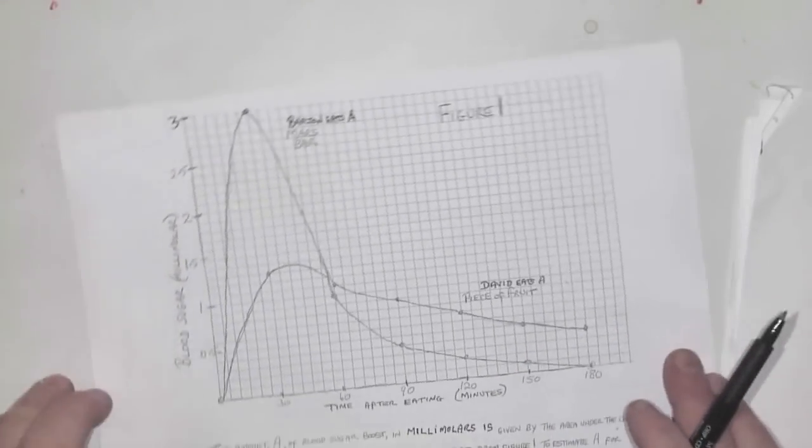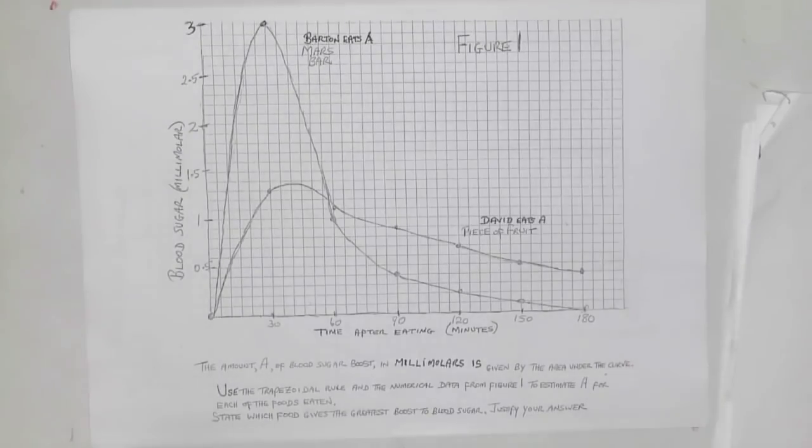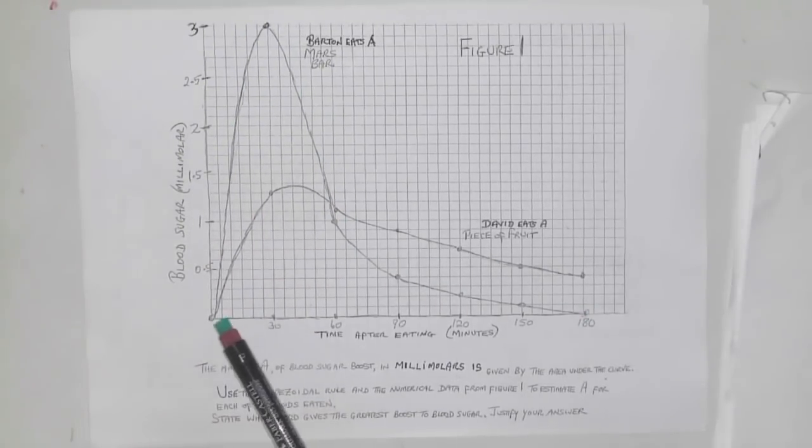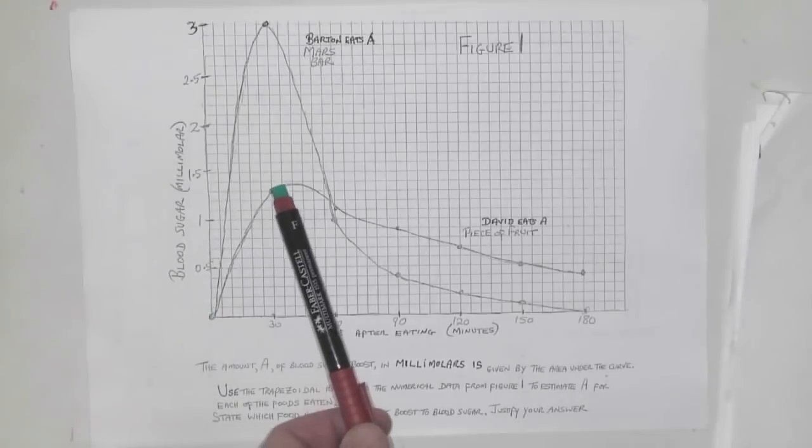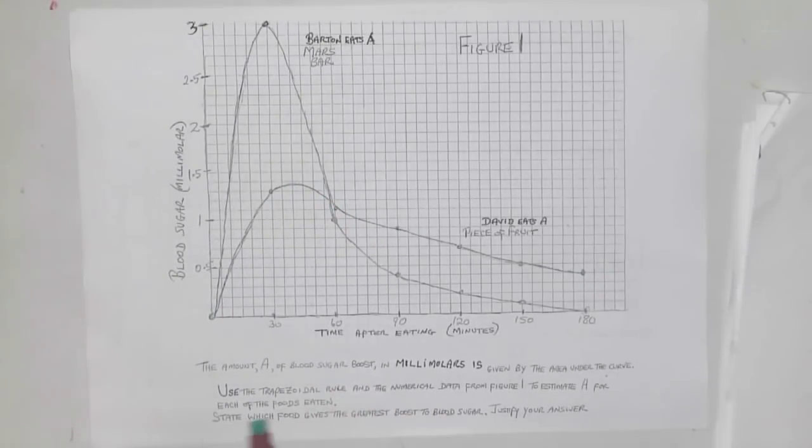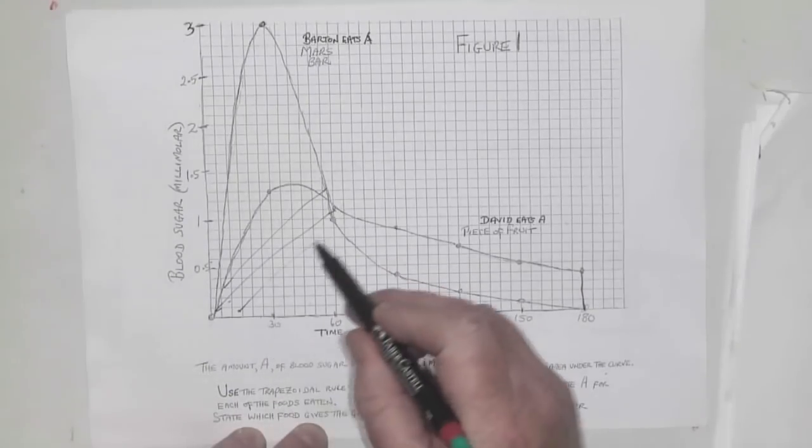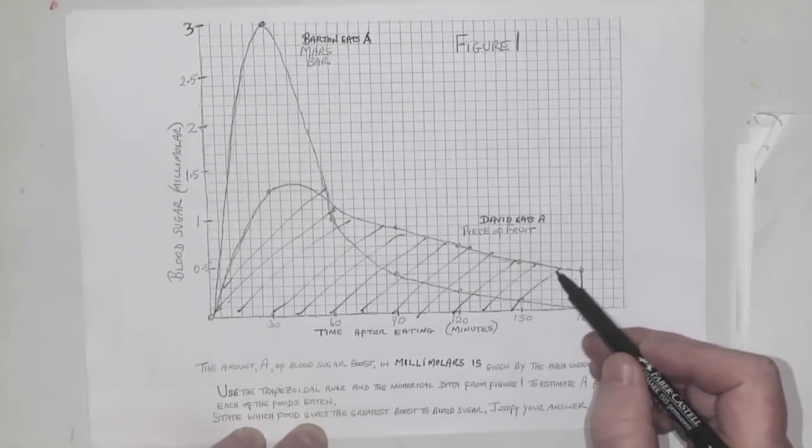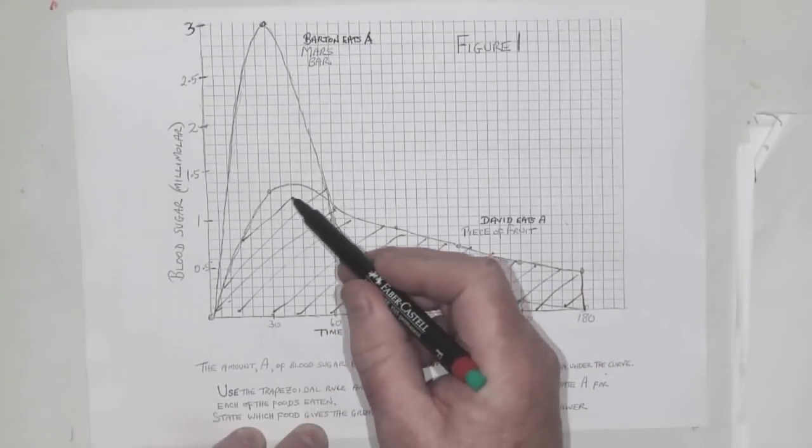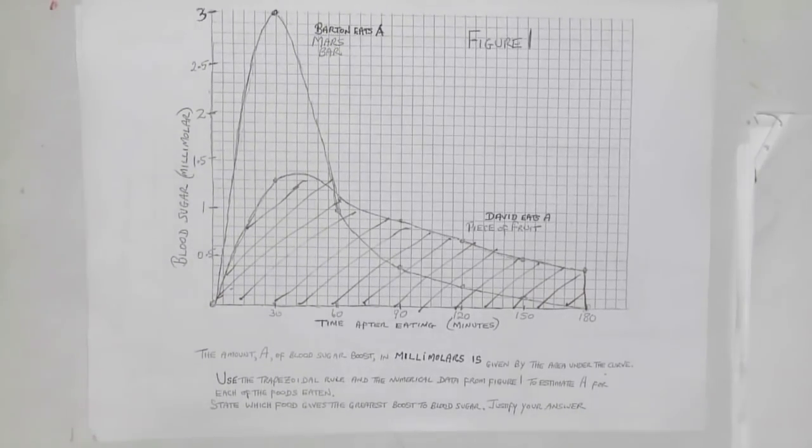Here is Figure 1. It shows Barton eats a Mars bar—a big peak—and David eats the piece of fruit, which peaks and lasts longer. The question says the amount A of blood sugar boost in millimolars is given by the area under the curve. For David and the piece of fruit, this shaded area corresponds to the boost in sugar the fruit gives. Our job is to find that red shaded area using the trapezoidal rule.